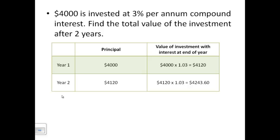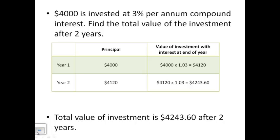The way I look at this is, in year 1, there's $4,000 times 1.03. That's my multiplier, and I get 4,120. In year 2, I take that 4,120 and multiply that by 1.03, and that gives me a final total value of 4,243.